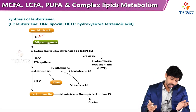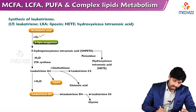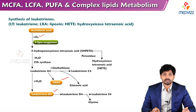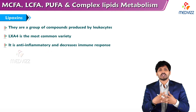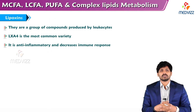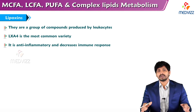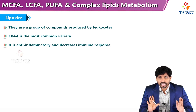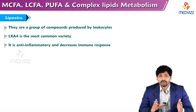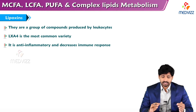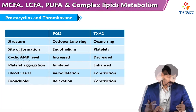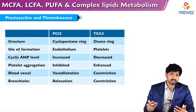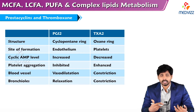The main highlighted compounds are LXA4 and leukotriene B4. Lipoxins are a group of compounds produced by leukocytes, and LXA4 is the most common variety of lipoxin. It is anti-inflammatory and decreases immune response.